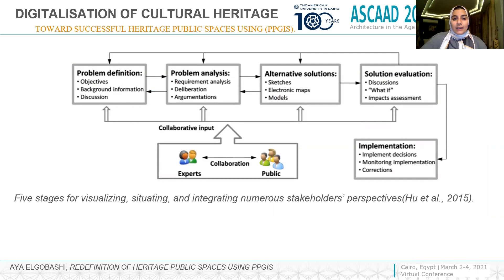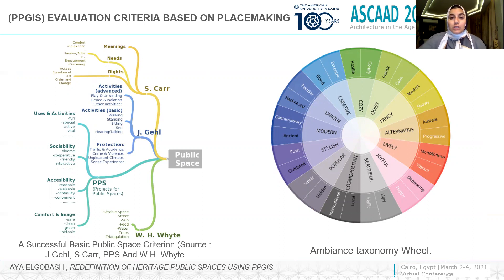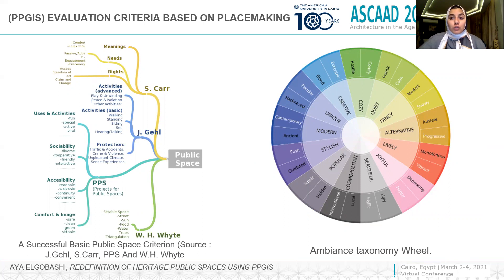Here are the five stages for analyzing and visualizing the situation, integrating numerous stakeholders' perspectives. PPGIS should have criteria. The criteria I defined in this research were based on the space I chose. The heritage public space can be enhanced by applying public place-making, using implementations that preserve its historical character without changing the character of the spaces.